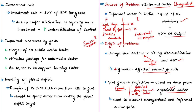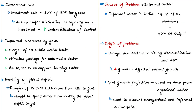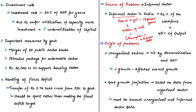Unorganized sector data is not being collected by the government — it is collected only once in five years because the sector has tens of millions of units, making monthly, quarterly or annual data collection impossible. In between the five-year reference years, data is only projected based on various assumptions. The implicit assumption is that the organized sector can be a proxy for the unorganized sector. But since GDP growth is declining every quarter, the author says this assumption cannot be considered true, and official data only represents the organized sector, not the informal sector.